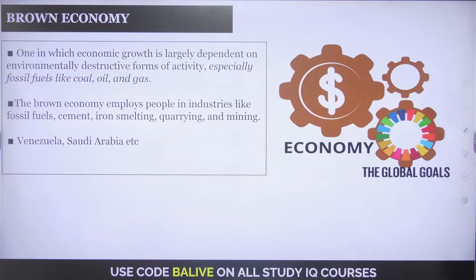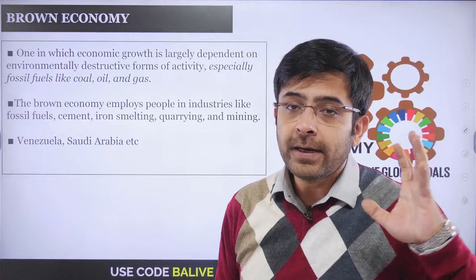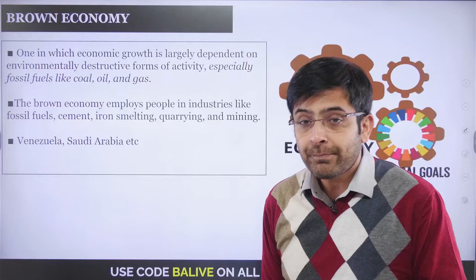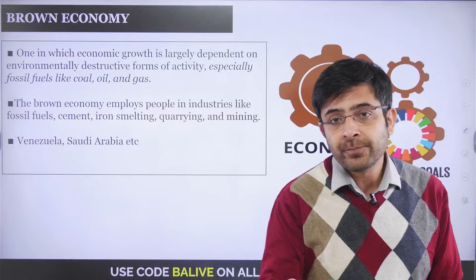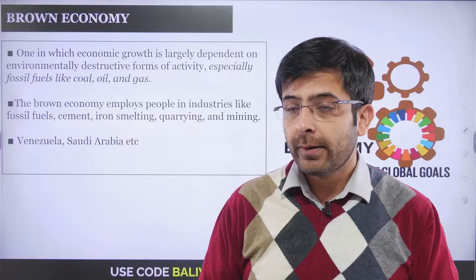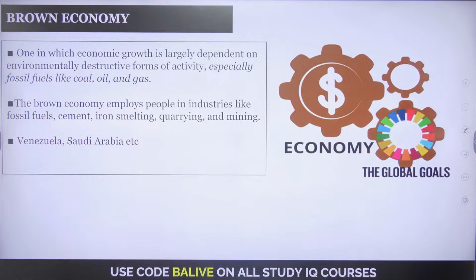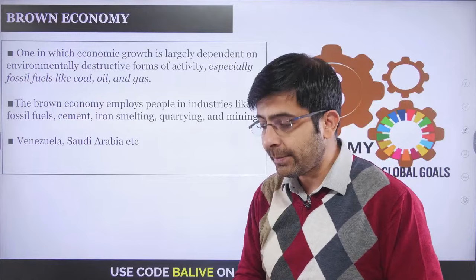Let's start with brown economy. As the name suggests, brown is to do with environmentally destructive forms of activity — countries building national capital based on unmitigated exploitation of resources. Examples include OECD countries, Saudi Arabia, Russia, and African nations sustaining themselves on unsustainable mining. They employ people primarily in fossil fuels, cement, iron smelting, quarrying, and mining. The two most prominent examples are Venezuela and Saudi Arabia.